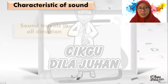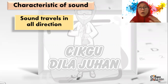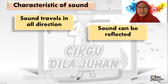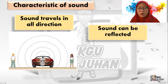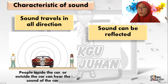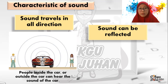We move to the characteristics of sound. Sounds travel in all directions. I'm not using a microphone, but my sound can still reach my computer — that shows sounds travel in all directions. For example, we have a car and the car is honking. The people inside the car, or outside — left, right, behind, or at the front — all can hear the sound of the car honking. This shows that sounds travel in all directions.